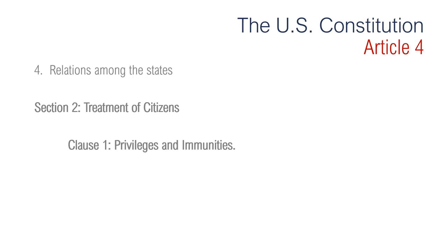Article 4, Section 2 is regarding the treatment of citizens. Clause 1 is about privileges and immunities — the citizens of each state shall be entitled to all privileges and immunities of the citizens in the several states. A citizen of a state has the same rights and privileges as the citizens of another state in which he or she happens to be. Clause 2 is about extradition — any person accused of a crime who flees to another state must be returned to the state in which the crime occurred.